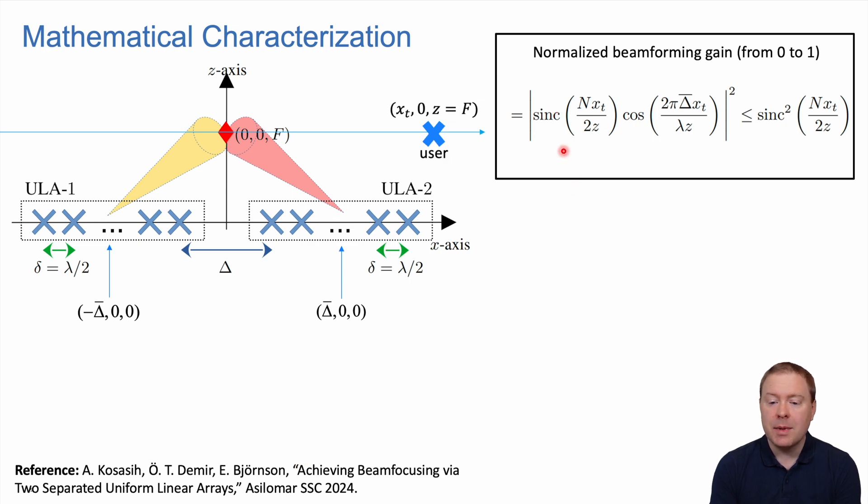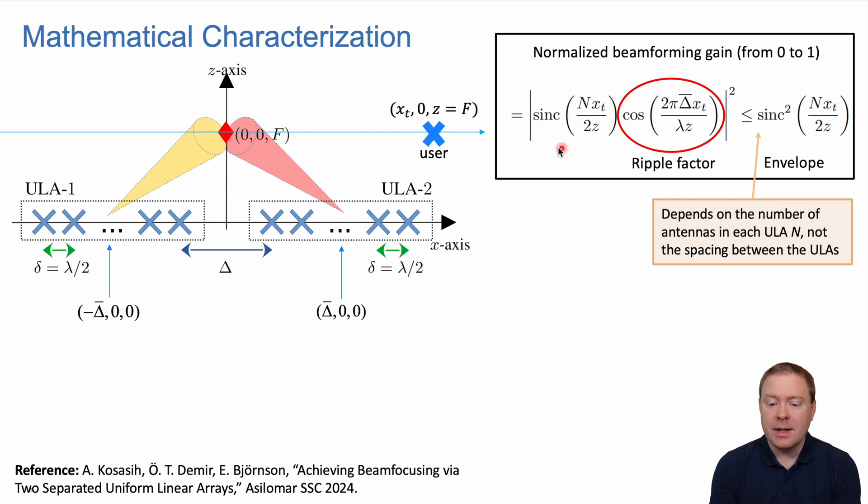The formula contains different components. There's one sinc function resembling what you'd normally get from one array, working as an envelope of the beam pattern—what one n-antenna array would generate transmitting towards the user. Then there's a ripple factor, a cosine varying more rapidly, depending on wavelength, distance, and the distance delta bar between the two array centers.